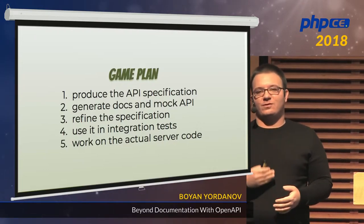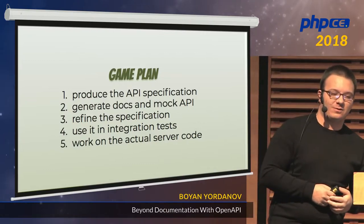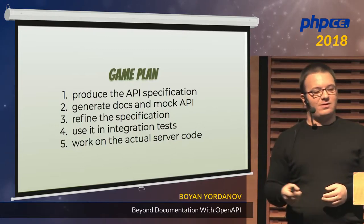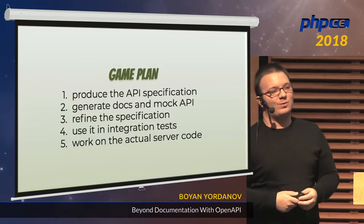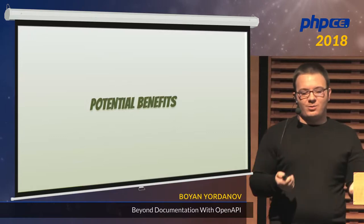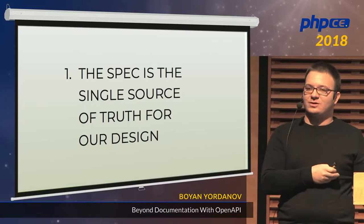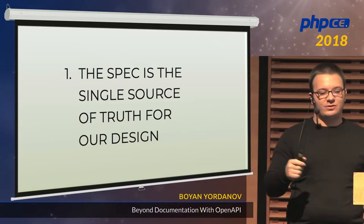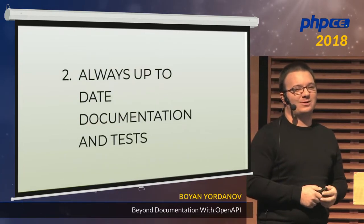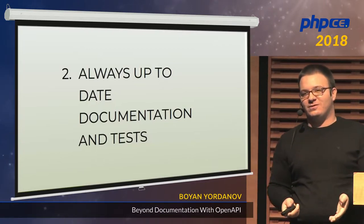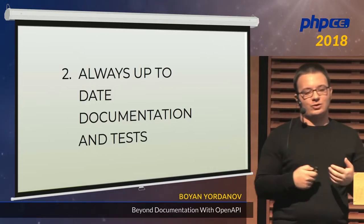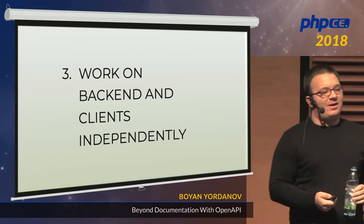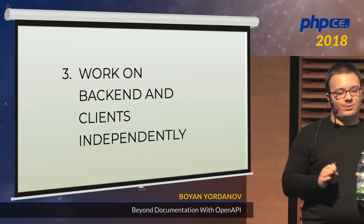This helps us prevent the constant back and forth between the clients and the back-end developers, and actually saves time because the feedback loop is shorter. You don't need to write those 50 lines of PHP again and again just to make some changes. The benefits are pretty obvious: the specification becomes the single source of truth for our design — if it's not there, it doesn't exist. We should enforce that by code reviews and with tests. The documentation and the tests can't be out of date because they are generated from the spec. When we make the writing easy, people are going to actually follow it, and we can sort of work independently and save time by parallelizing that work.